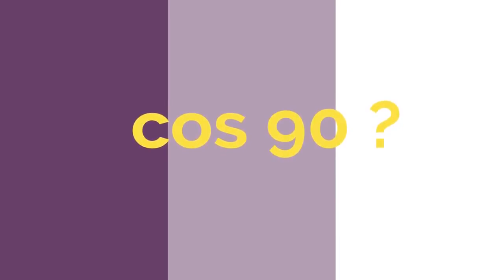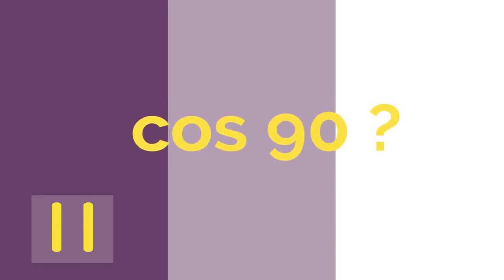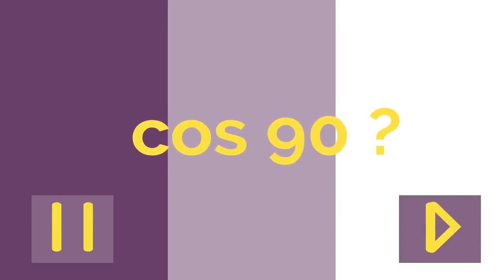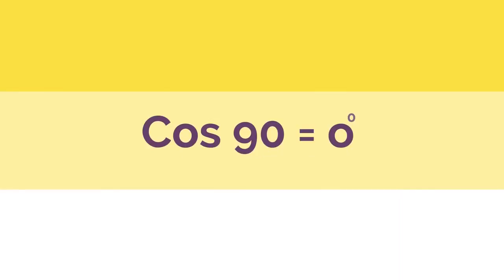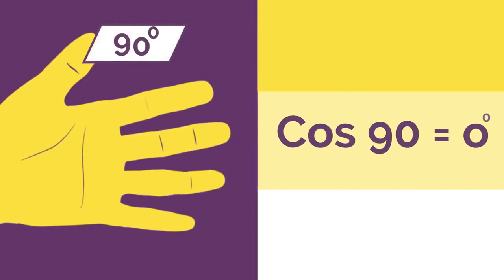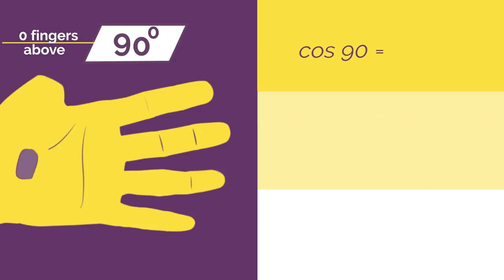What would cos 90 be? Work out the answer and click here when you're ready to check. Did you get zero degrees? Bend down your 90 degree thumb and there are no fingers above. So root 0 divided by 2 is 0.